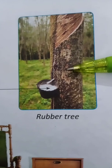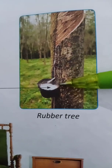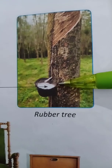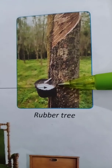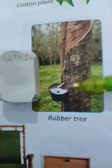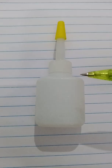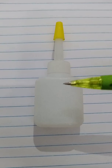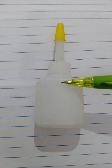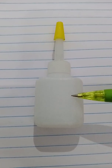We get rubber from the juice of the rubber tree. Rubber is used to make erasers, tyres and pipes. We get gum from the keeker tree. Gum is used to make glue.